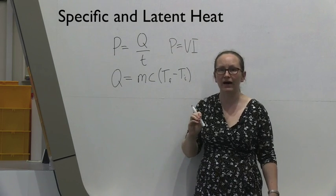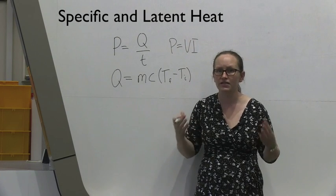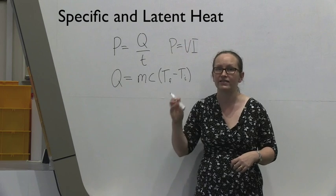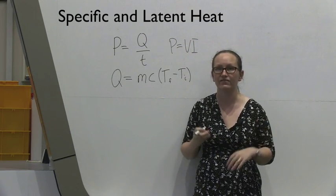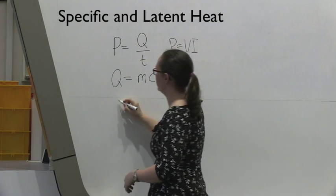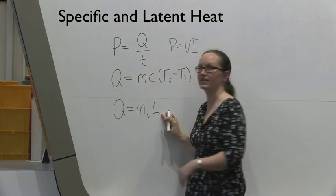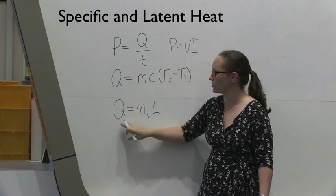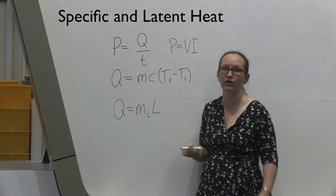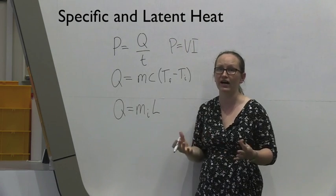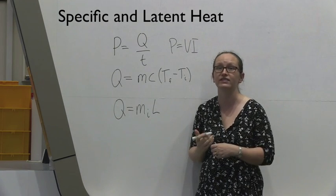In the second part, you're going to be measuring the latent heat of fusion of ice. You're going to be submerging ice in water and measuring the temperature before and after the ice has melted, then using Q equals the mass of ice times the latent heat of fusion. You'll also be able to work out the heat transfer by looking at the change in temperature of the water around the ice and the change in temperature of the ice after it's melted.